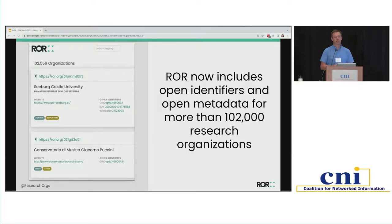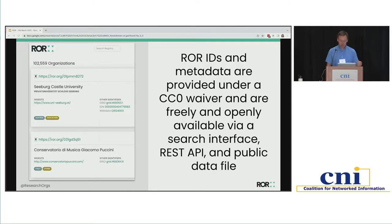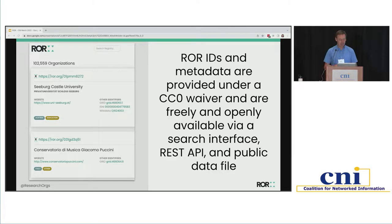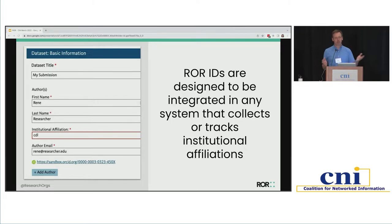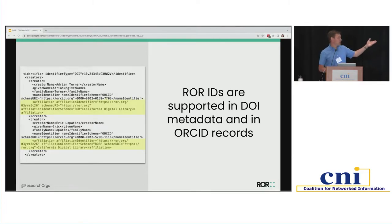Today we have over 102,000 entries in this registry. All the information about each of these organizations is openly available with a CC0 waiver, and we have a set of infrastructure tools like a REST API and public data file that allow the community to leverage the information in their systems. ROR IDs are meant to be integrated into other systems — Crossref, DataCite, and ORCID have information about people and outputs, while ROR is more about identifying the affiliation. To demystify it, it truly is just a string, an integer, a link within a metadata file that declares an open identifier scheme that can be leveraged and reused.